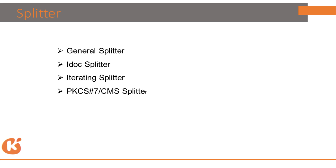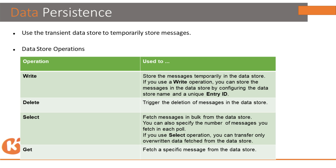In the splitter we have four types: General Splitter (most popular), IDoc Splitter, Iterating Splitter, and PKCS7 Splitter. We also have a palette called Data Store Operations, which has four functions: Write, Delete, Select, and Get.